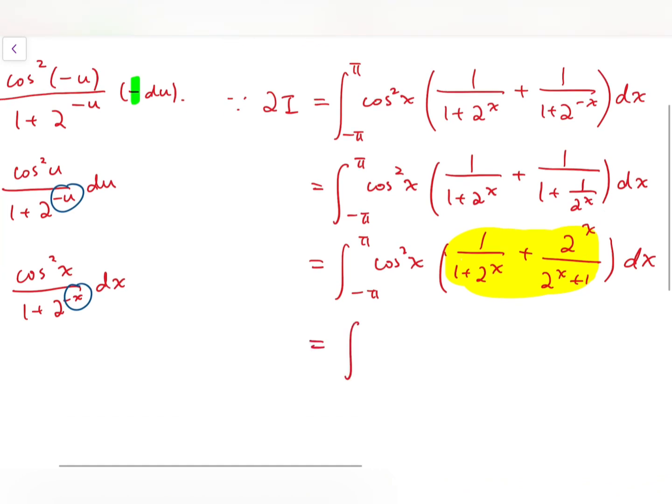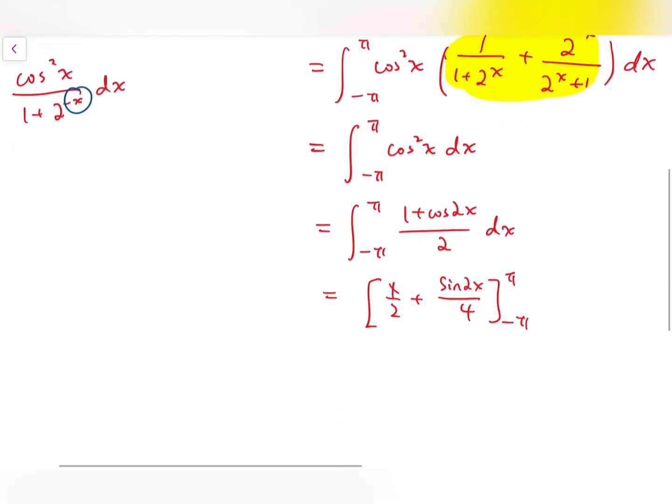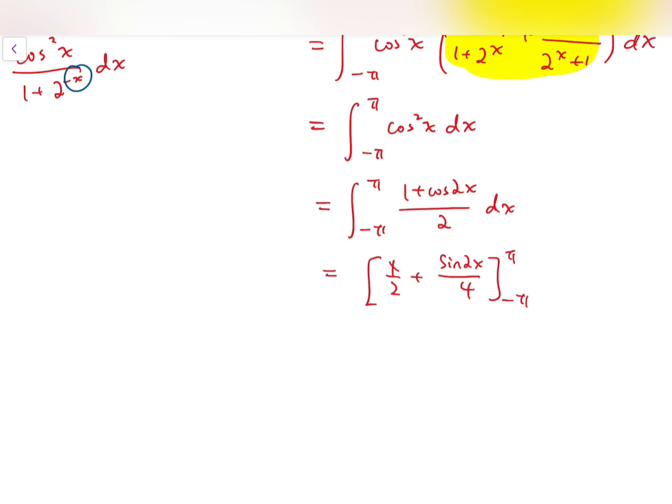So the integral becomes much easier. We realize that if we actually double the integral, then we can rewrite that as just integrating cos squared x, using double angle identity. And then we can finally integrate the function. So we have x over 2 plus sin 2x over 4, with the limits minus pi to pi.